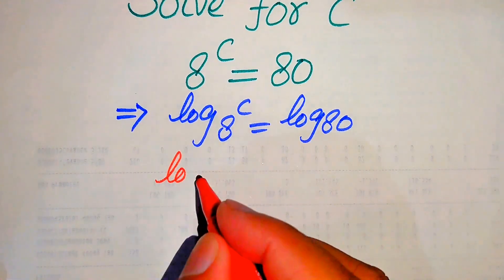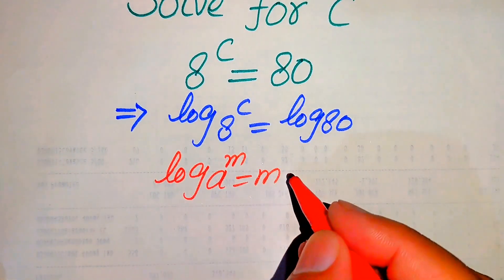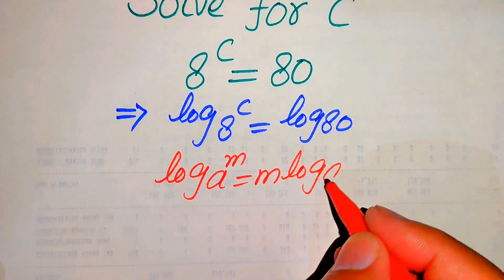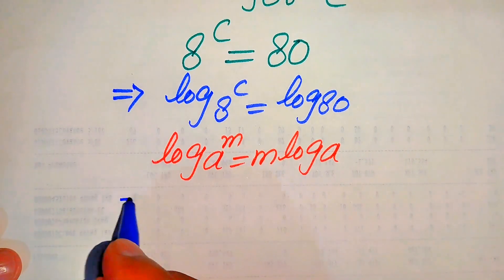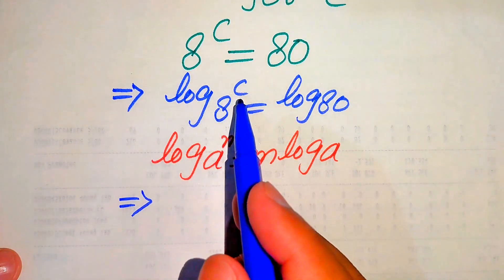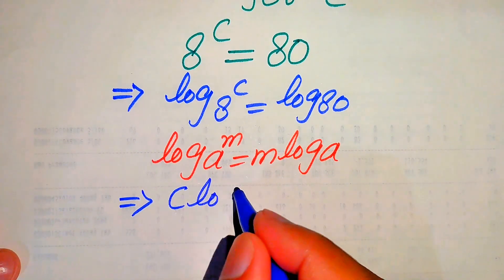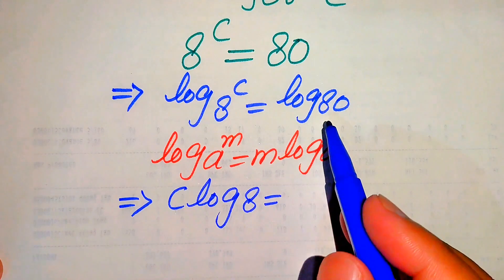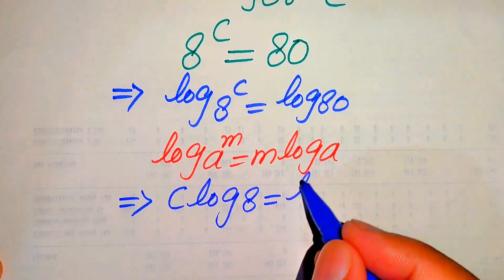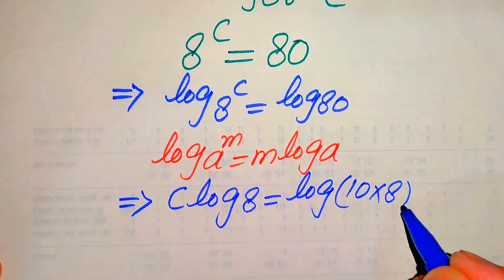According to this property of log, if we have log of A to the power of M, it equals M times log A. Using this property, we move the exponent C to the front of the log, and it is written as C times log 8 equals log 80. We then write 80 as 10 times 8.